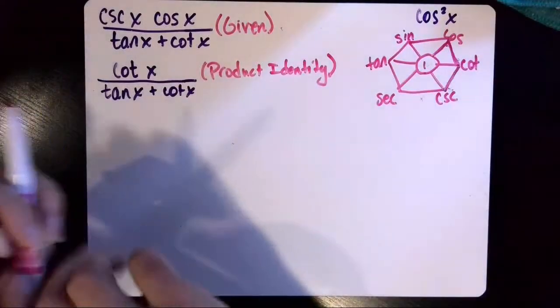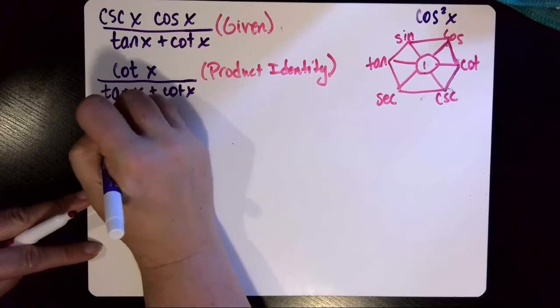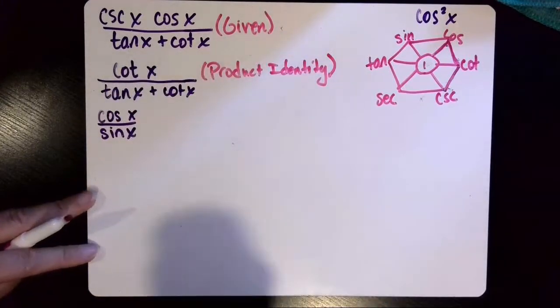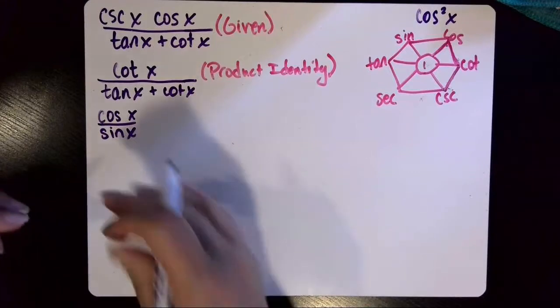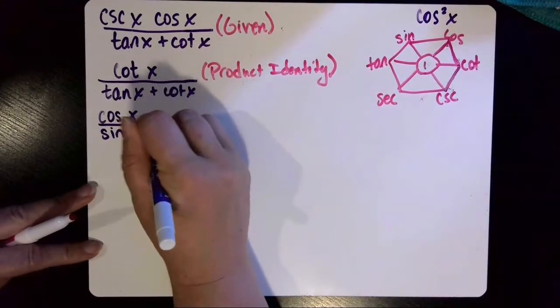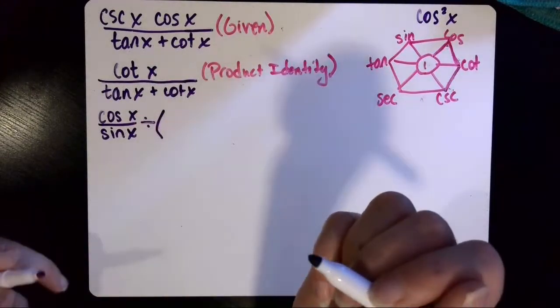And I'm going to go ahead and substitute that then for my cotangent in the numerator. So that is cosine of x divided by the sine of x. And just so I don't end up with stacked fractions, I'm going to change this division bar into a division symbol and then group my denominator in parentheses.